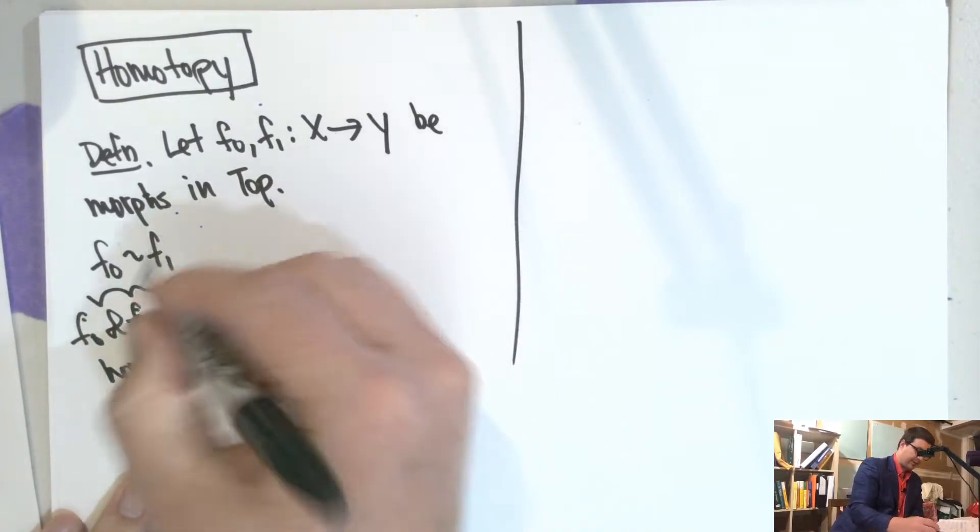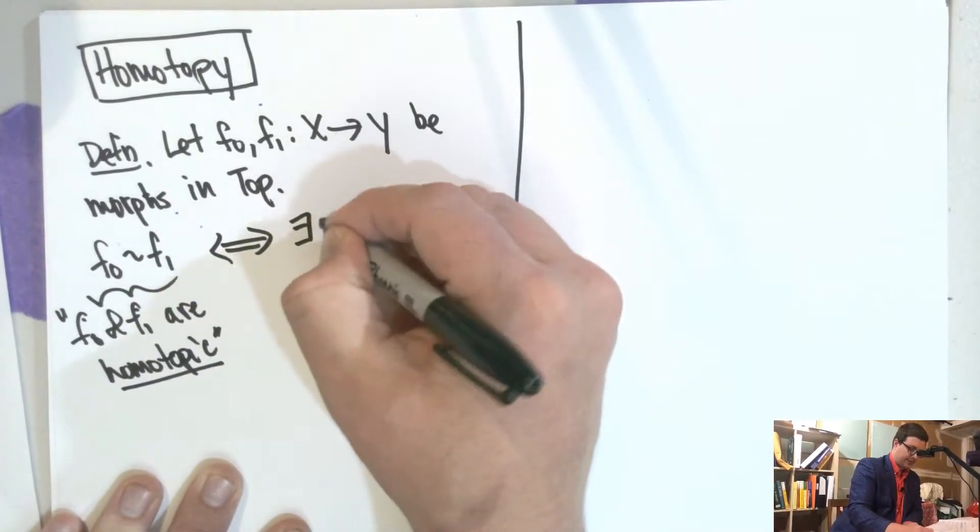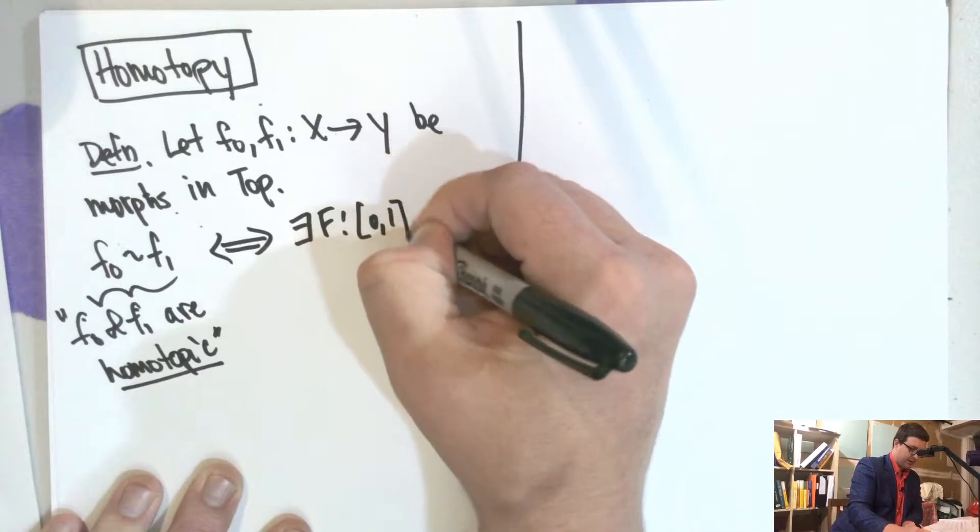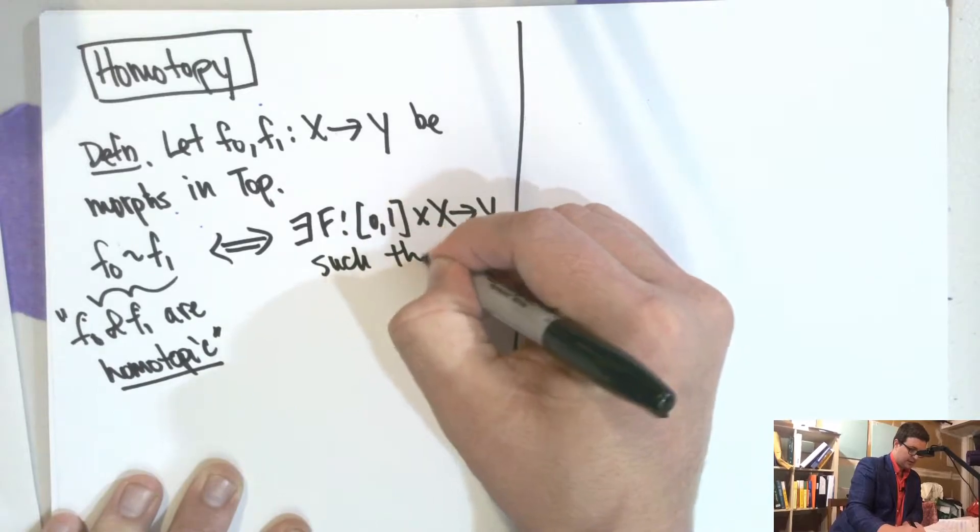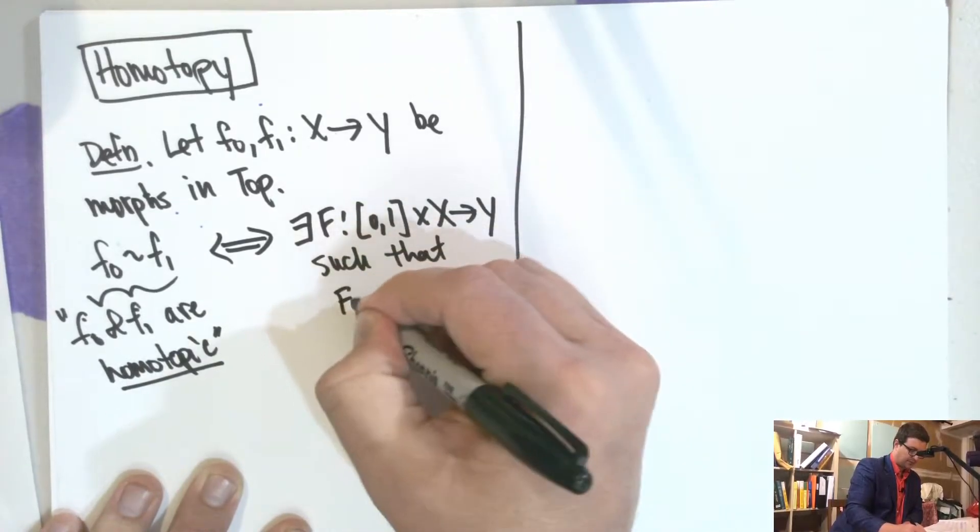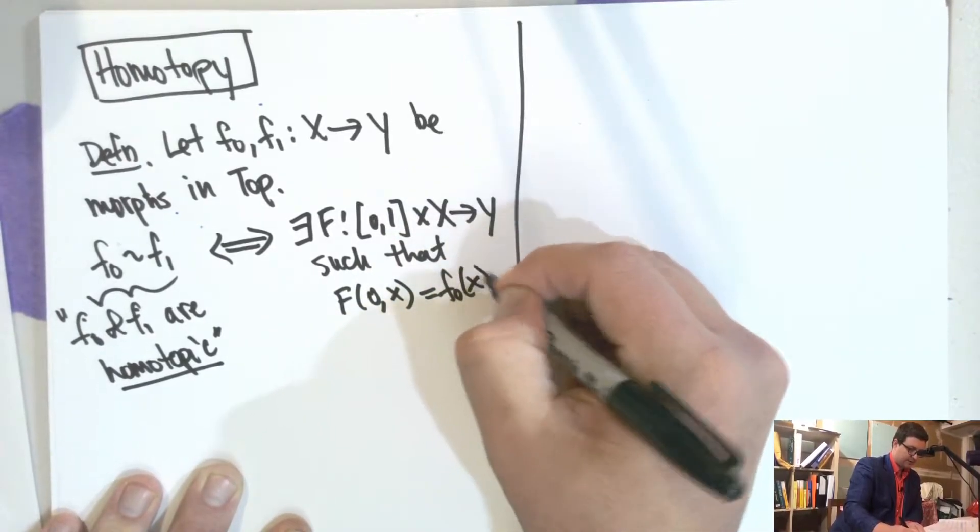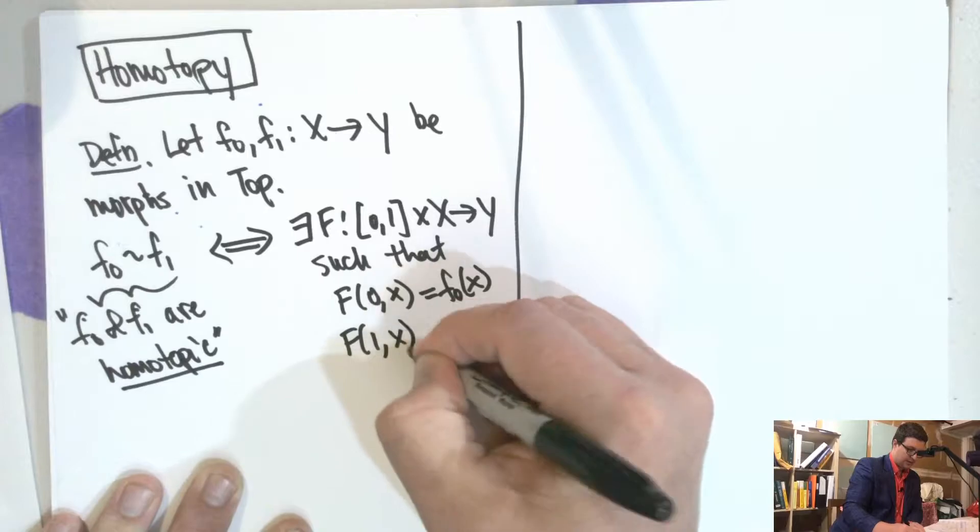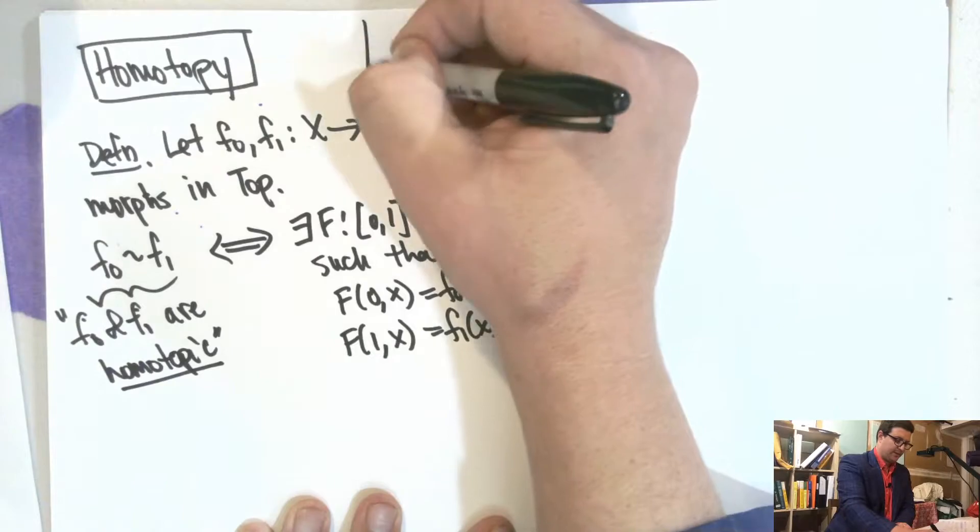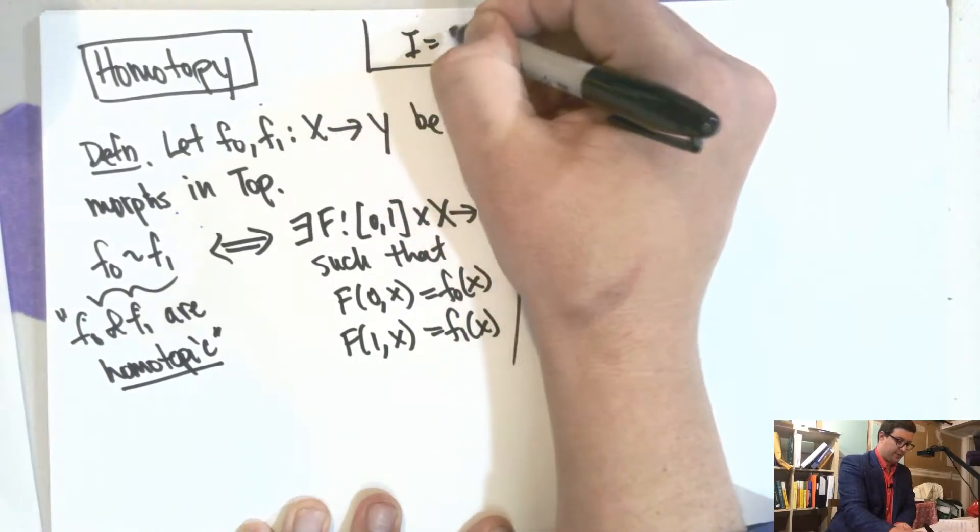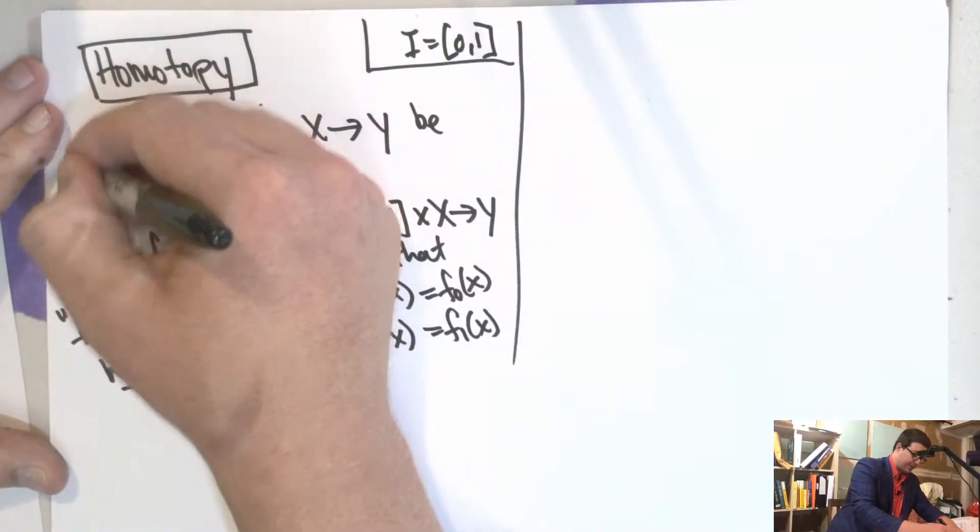If and only if there exists some function interpolating them such that F(0) equals F0, this is the first one. And as usual, we're going to write the interval as I. So this is what it means to be homotopic.